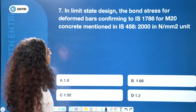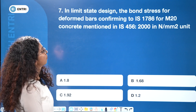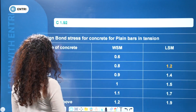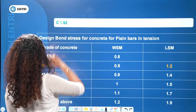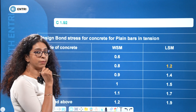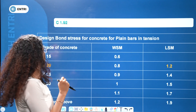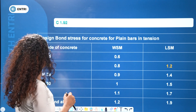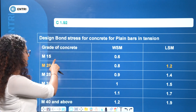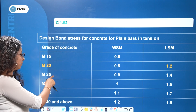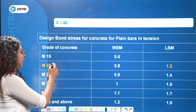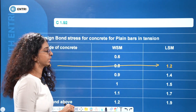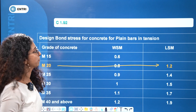Using the limit state method, looking at the bond stress for deformed bars: we refer to a table in the IS code for designed bond stress for plain bars in tension. For M20 grade concrete, the bond stress is 1.2 Newton per mm².